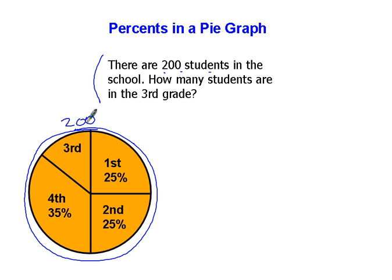How many students are in the third grade? Well, we've got 25% of these 200 kids in the first grade, 25% in the second grade of the 200. Notice how I keep going back to this number in the problem. 35% of the 200 students are in the fourth grade. We don't know the percent that's in the third grade.